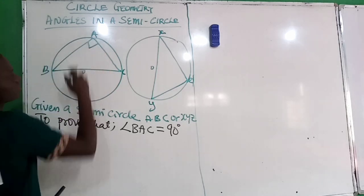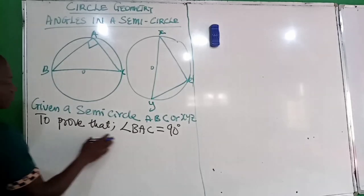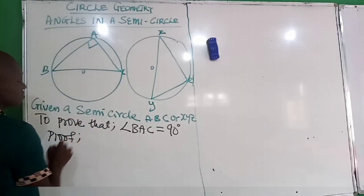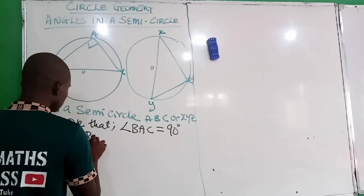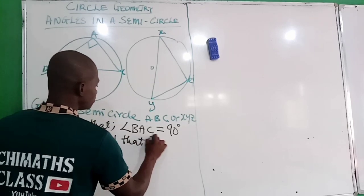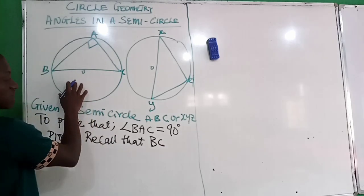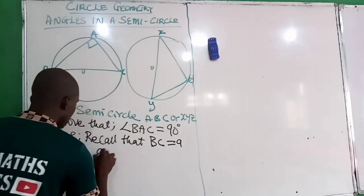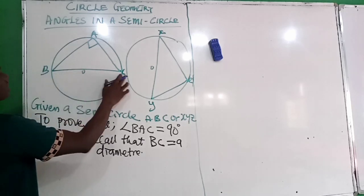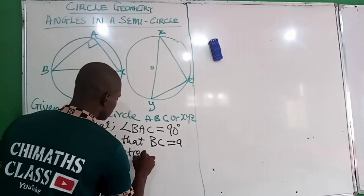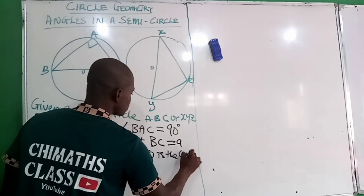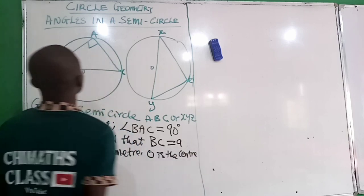Since this is the main circle, we want to prove that angle BAC is equal to 90 degrees. Recall that BC is a diameter, and O is the center.